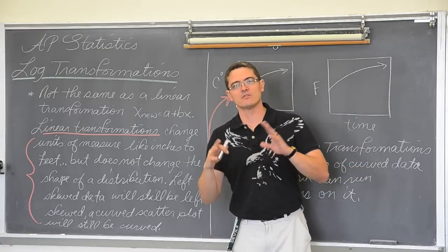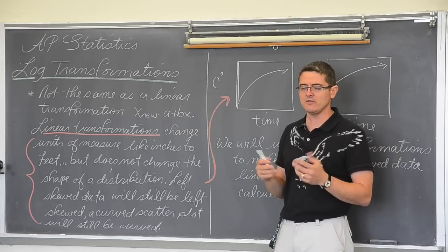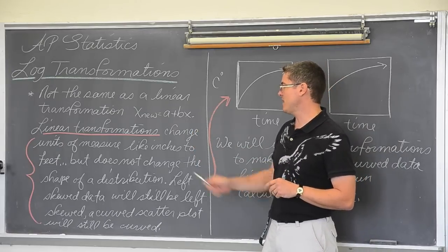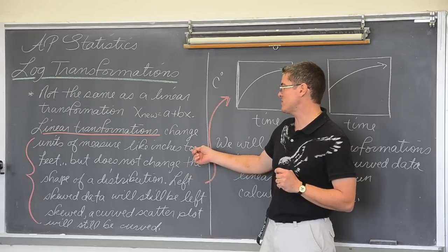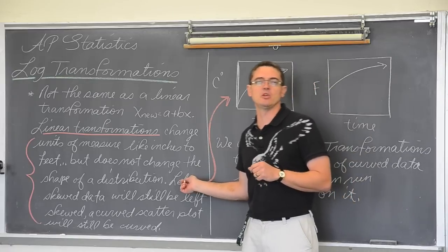Where you're changing the units of measure from whatever is in the problem into numbers of z-scores away from, or standard deviations away from the mean. So a linear transformation will change the unit of measure, like inches to feet, but it will not change the shape of the distribution.